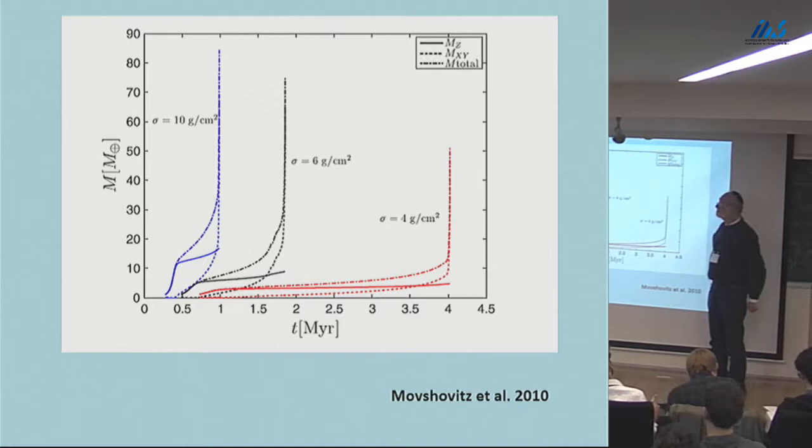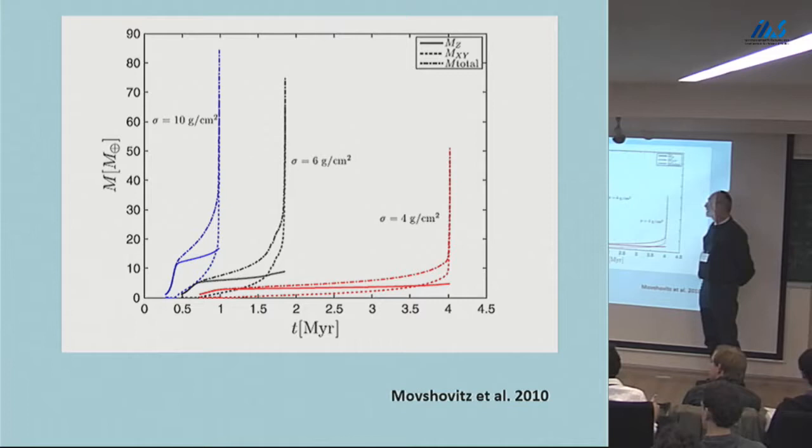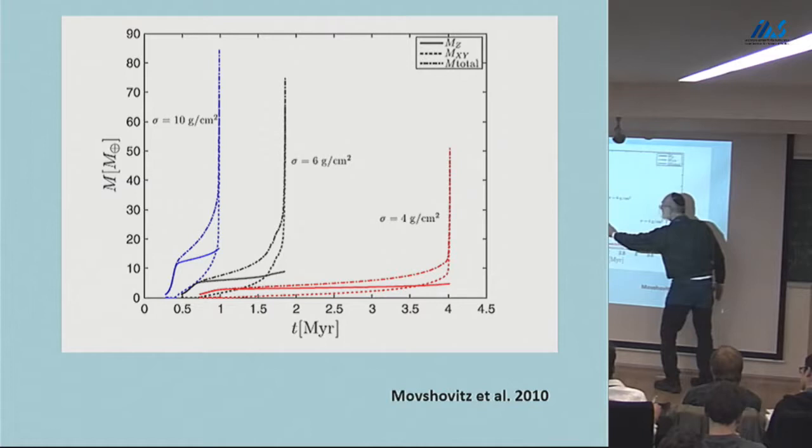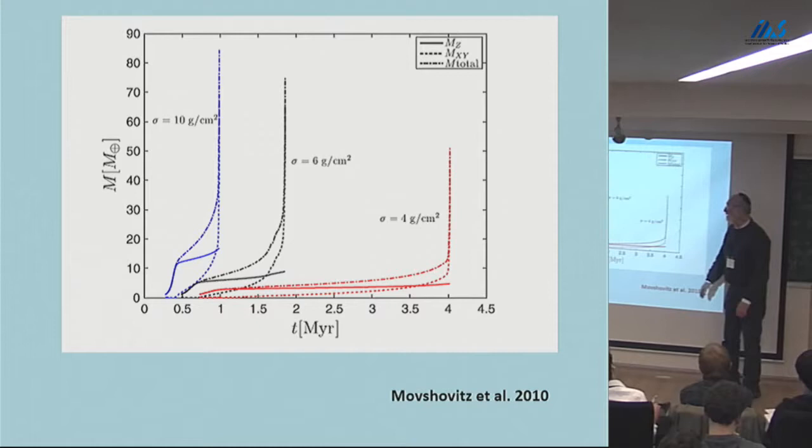Regarding grain opacities: the Pollack opacities are what was assumed, whatever Pollack assumed. That's the Pollack et al. calculation used for the grain opacity inputs.